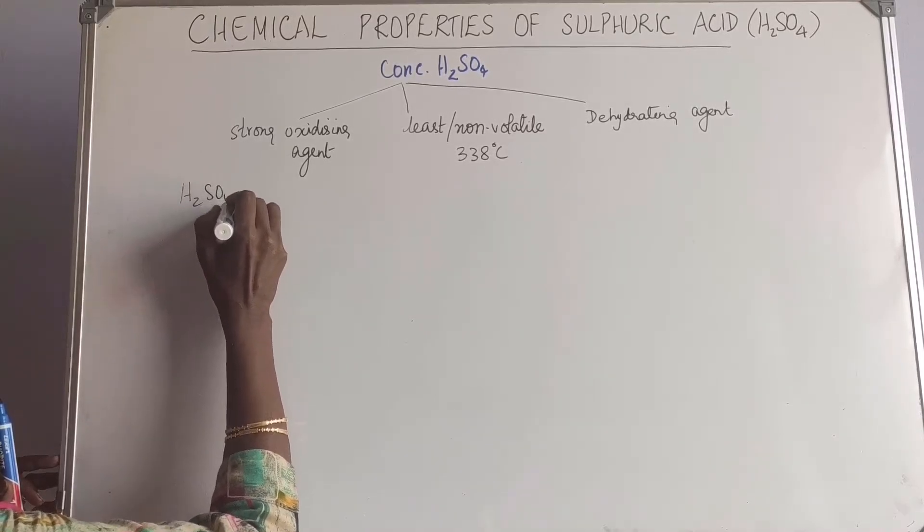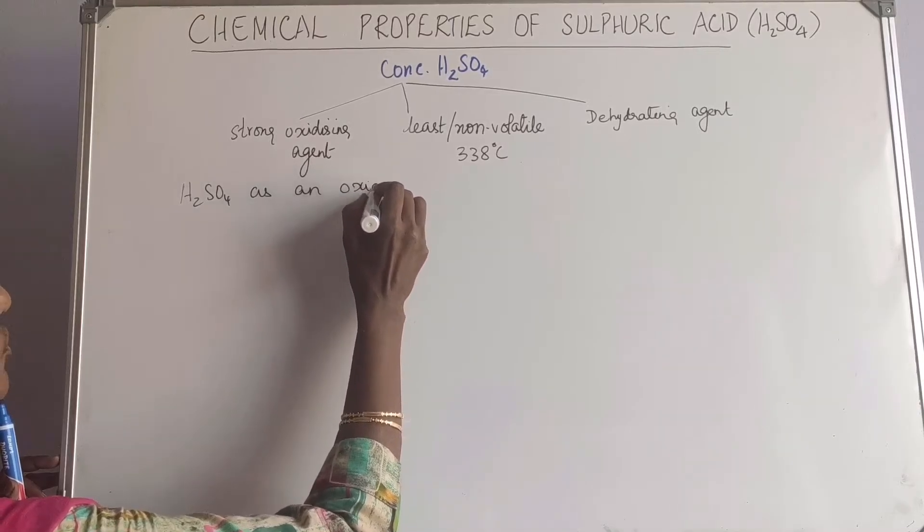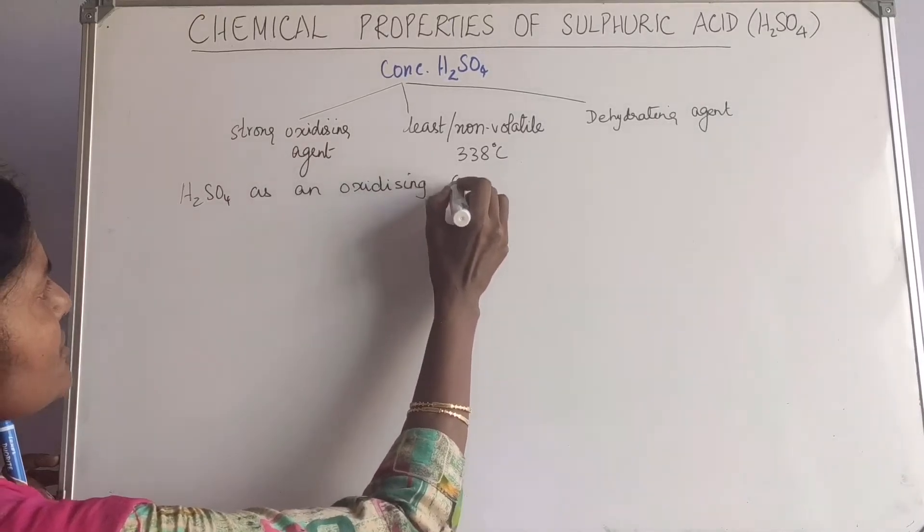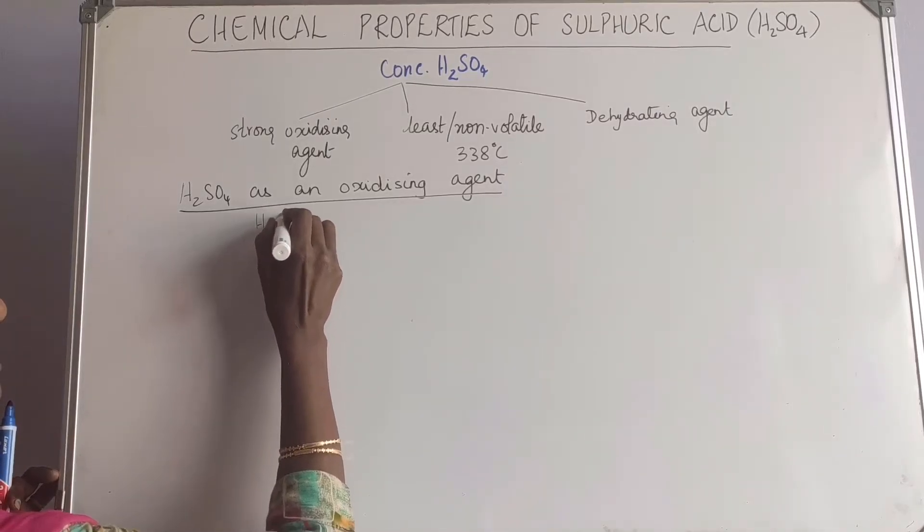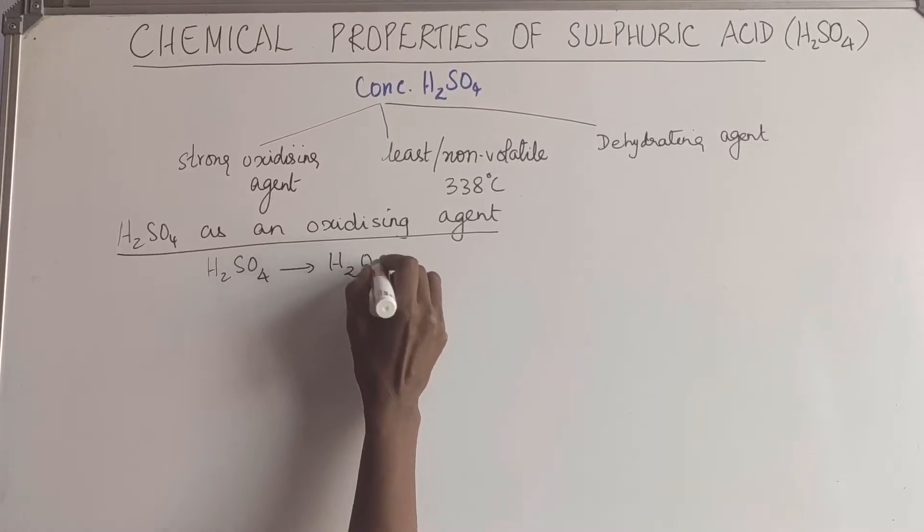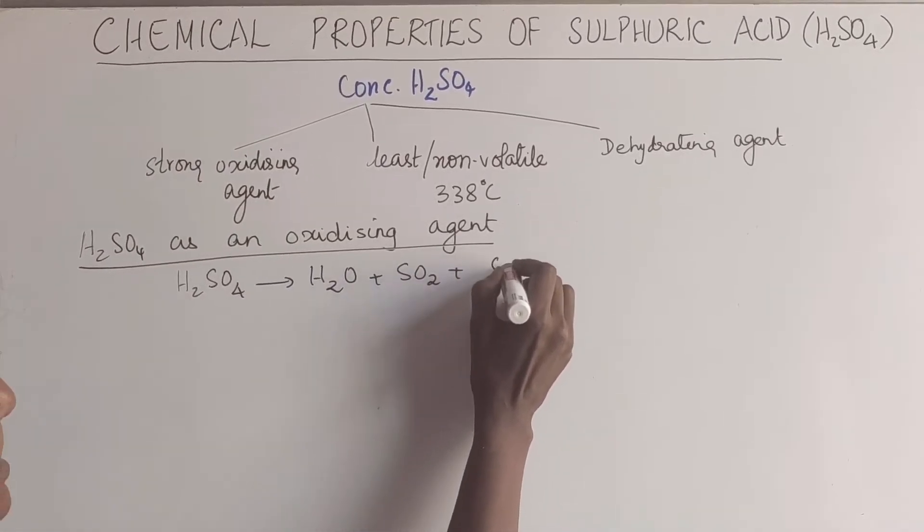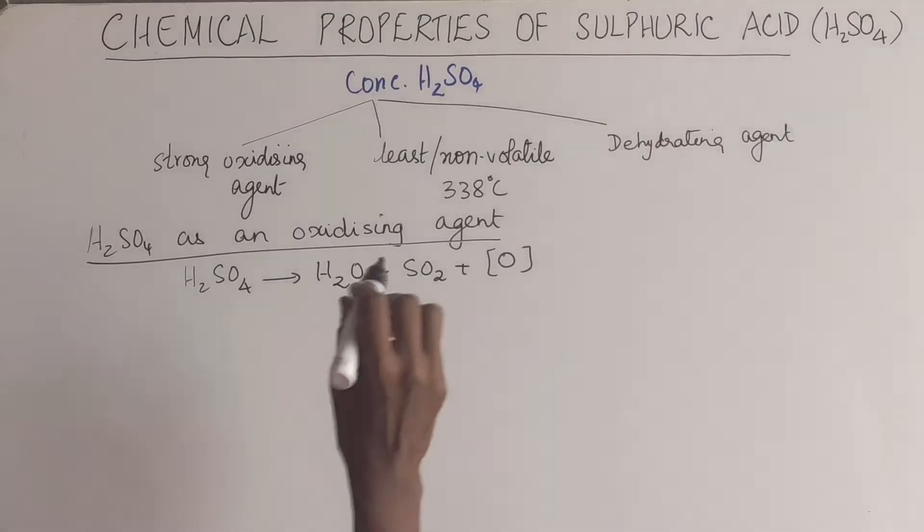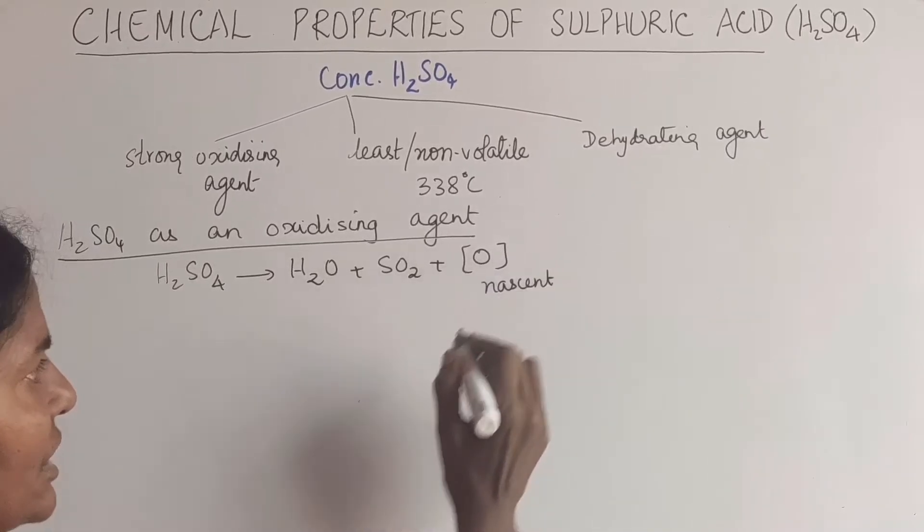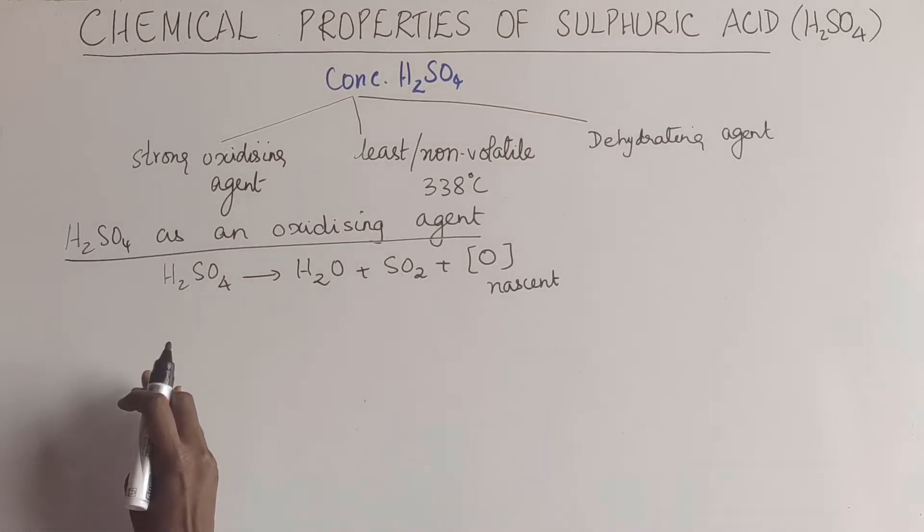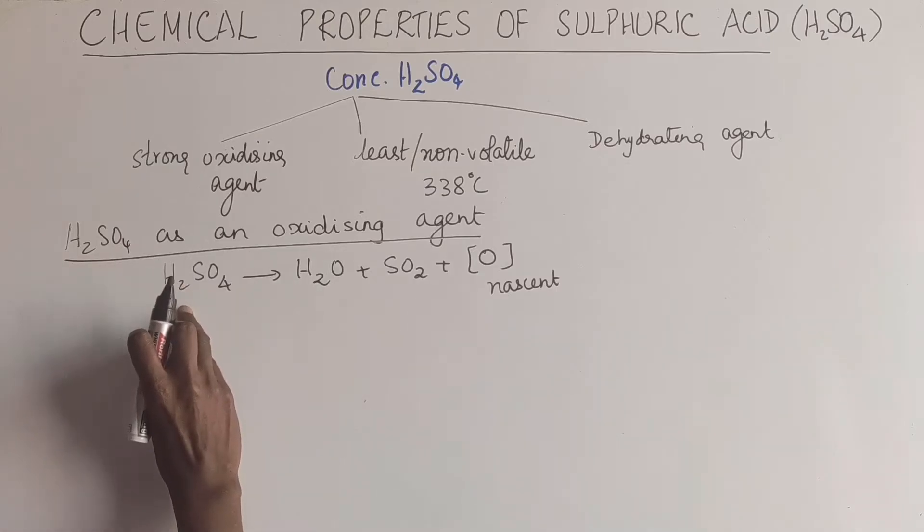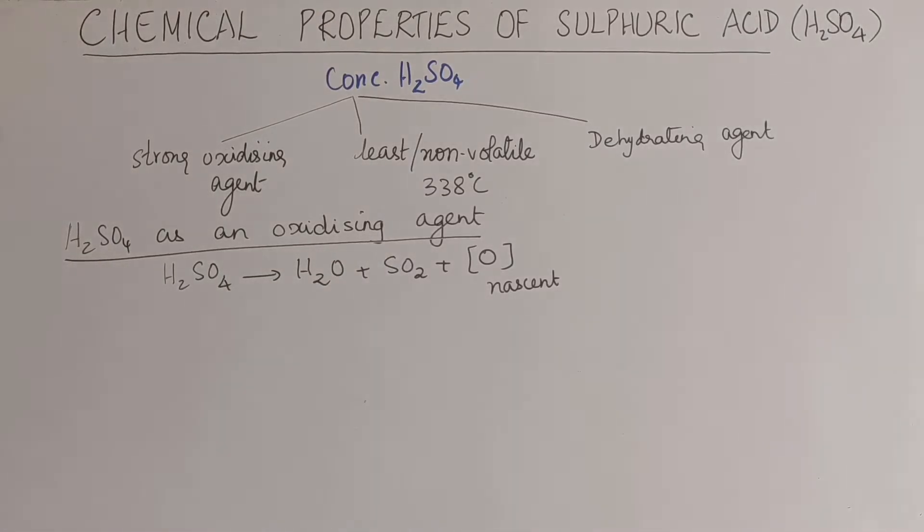So sulfuric acid as an oxidizing agent. When can a compound act as an oxidizing agent? When it is able to oxidize the other compounds that it comes across. Now when you take sulfuric acid, it can break down into water plus sulfur dioxide plus it releases nascent oxygen. Nascent oxygen means the most active form of any element is in the nascent form. We have two elements we need to know about, carbon and sulfur being oxidized by concentrated sulfuric acid.